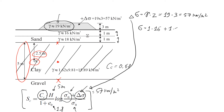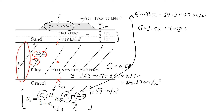We are given the bulk density of the clay as 1.62 g/cm³. To convert to unit weight we multiply by 9.81: 1.62 × 9.81 ≈ 15.89 kN/m³. We then use this value for the clay contribution: 2.5 meters × 15.89. The total stress at point A works out to approximately 73.7 kN/m².